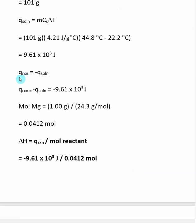We need to remember that q reaction equals negative q solution. So all we need to do to go from q solution to q reaction is change the sign on q solution that we just calculated. So q reaction is negative 9.61 times 10 to the third joules.